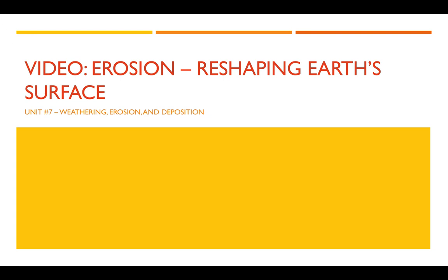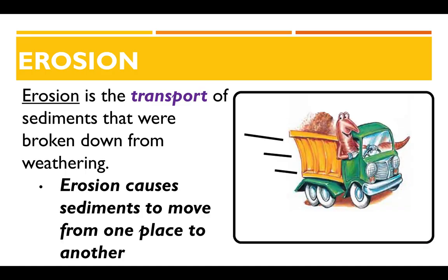In this video we're going to learn a little bit more about the process of erosion and how erosional processes can actually reshape what earth's surface looks like. To start, erosion is the transport or the removal of sediment that were broken down from weathering. Weathering breaks down rock into smaller pieces; erosion takes those pieces and moves them from one place to another, as shown in the picture of a pickup truck transporting sediments.